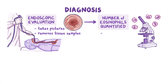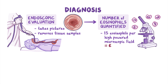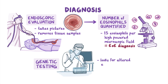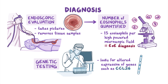the number of eosinophils in the esophagus are quantified by a pathologist. If the level is at least 15 eosinophils per high-powered microscopic field, then EOE is diagnosed. Testing can also be done to determine if there is altered expression of genes, such as CCL26, that play a role in eosinophilic esophagitis.